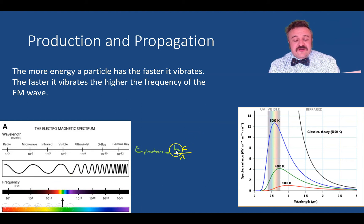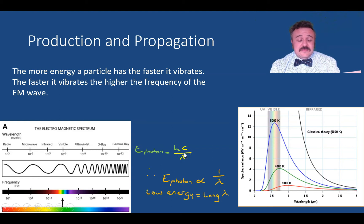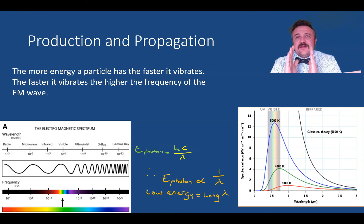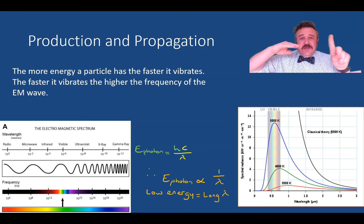The faster it vibrates, the higher the frequency. This brings us to the combination of the speed-of-wave equations and the Planck-Einstein equations: the energy of a photon equals Planck's constant multiplied by the speed of light divided by the wavelength. So the more energetic a photon is, the shorter the wavelength; the less energy, the longer the wavelength.